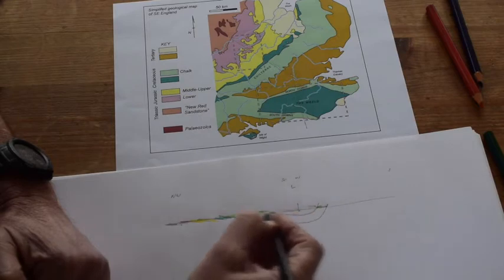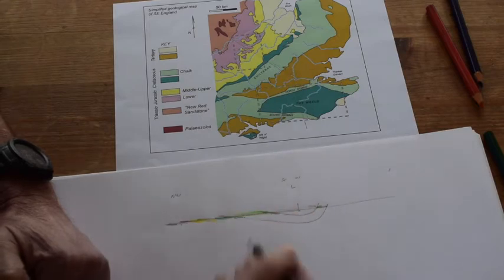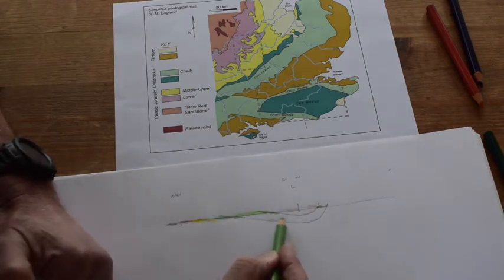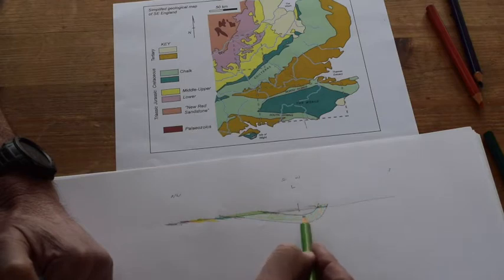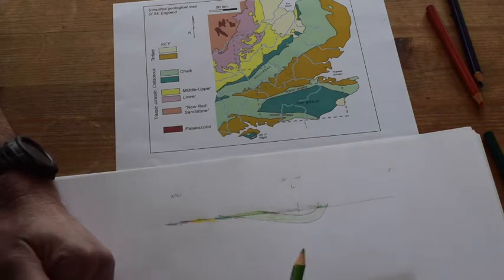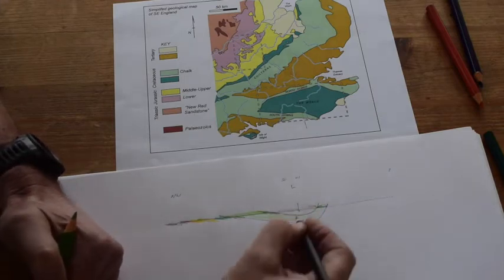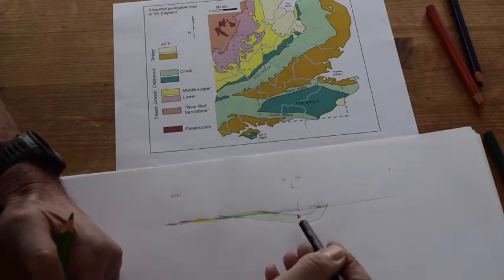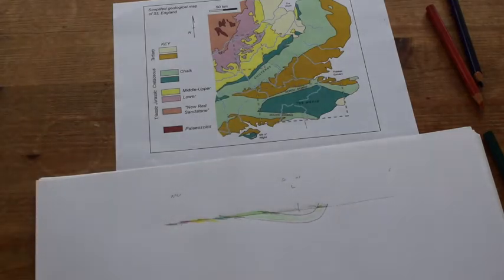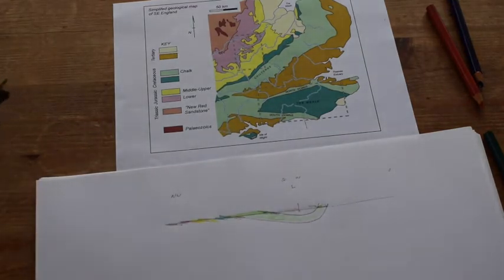Let's just sketch this up. What we've done is we've identified a synform, a downward-closing fold which has got younger rocks in the core, so it's also a syncline. So London sits in the middle of a syncline that's also a synform.